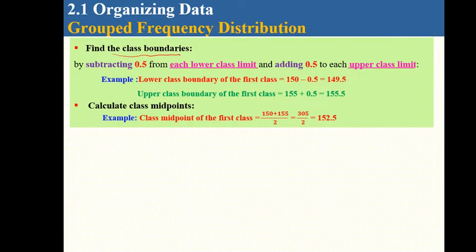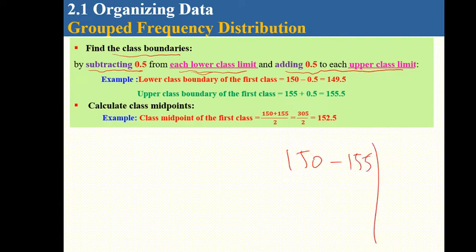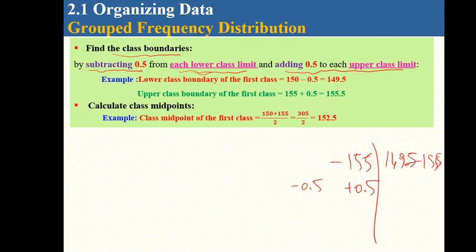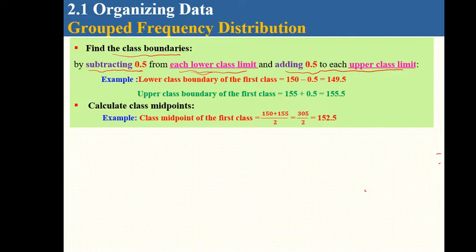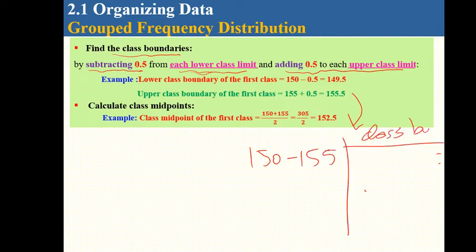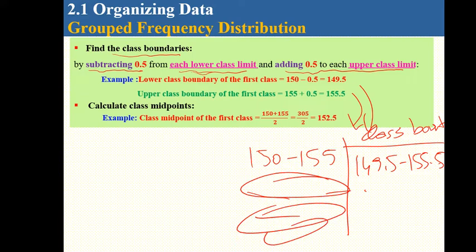Now let's find the class boundaries. Since they are all whole numbers, we subtract 0.5 from each lower class limit and add 0.5 to each upper class limit. For the first class 150–155, the boundaries are 149.5 and 155.5. You do this for each class. For class midpoints, you add the limits and divide by 2.